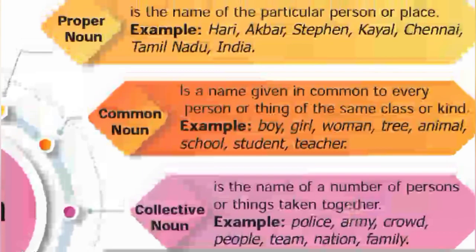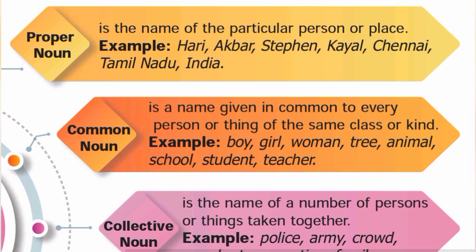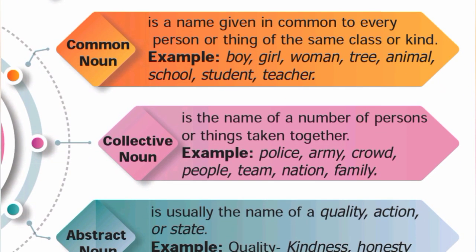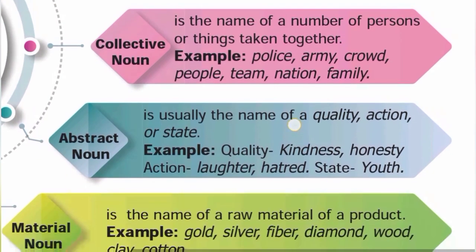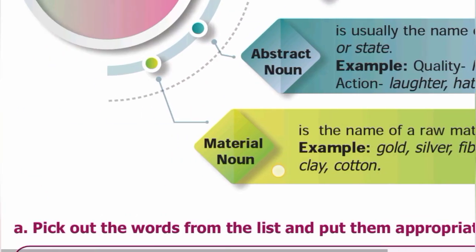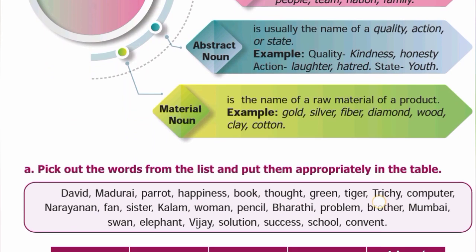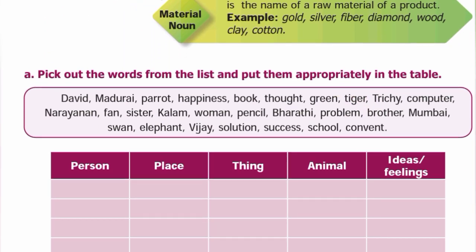To summarize: the types of noun are proper noun (which specifies a particular person or place), common noun, collective noun (for example, a herd of sheep), abstract noun (quality, action, or state), and material noun (raw material). Now let's pick out words from a list and put them appropriately in a table.